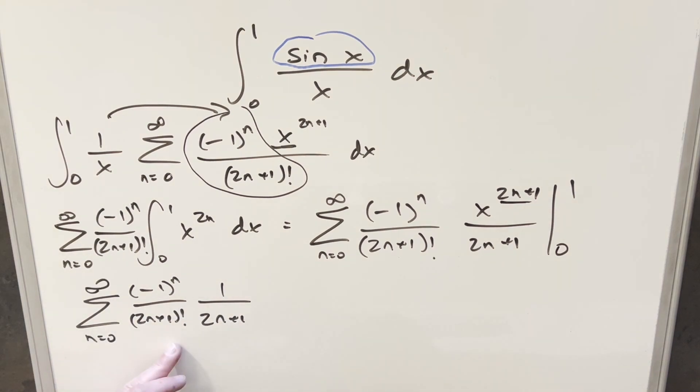So when we rewrite this thing, this part becomes 1 over 2n plus 1 times minus 1 to the n over 2n plus 1 factorial. But from here, I don't really know how to get an exact value for this thing. We can write out some terms and get an estimate. First, when you plug 0 in, everything becomes 1, so our first term is just 1.